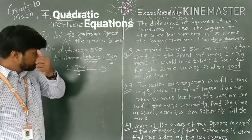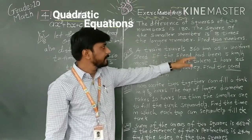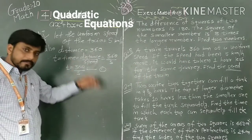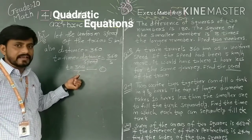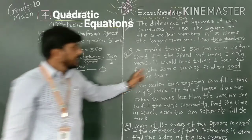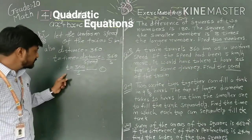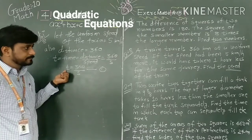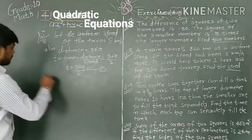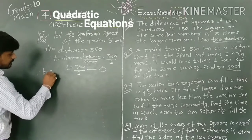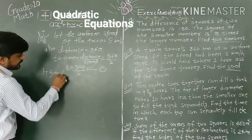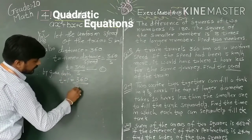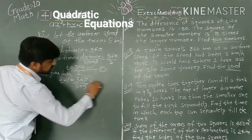If the speed had been 5 km per hour more, it would have taken 1 hour less for the same journey. So the new speed is s + 5 and the new time is T - 1. By the given condition: T - 1 = 360/(s + 5). This is our second equation.